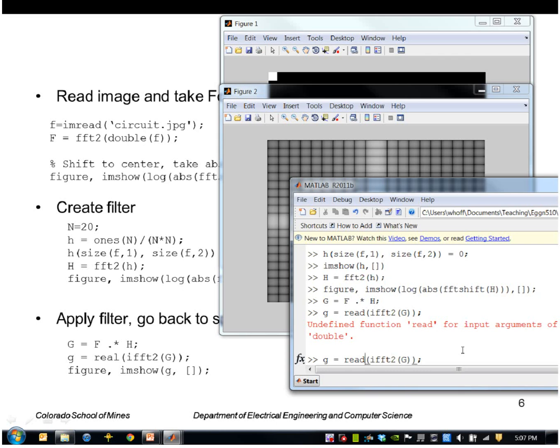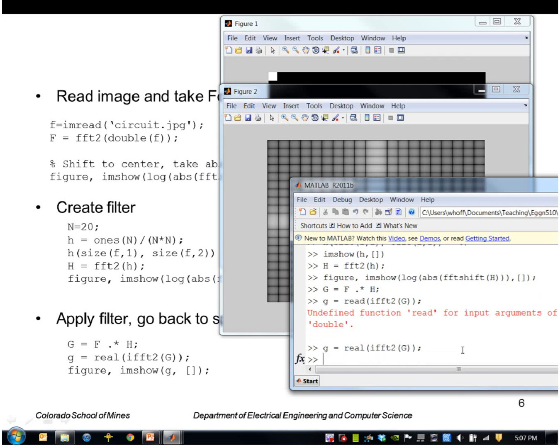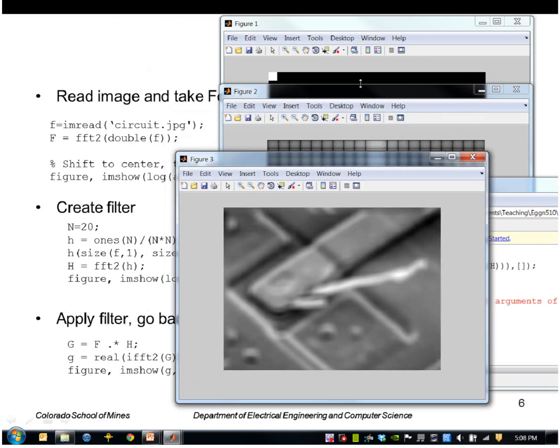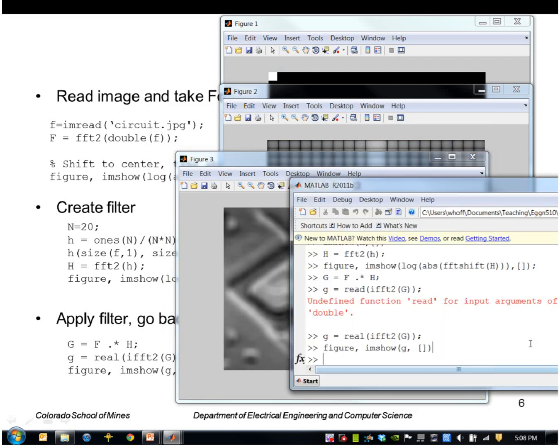Take the real and go ahead and display that. That is the blurry version of the input image as a result of doing that.